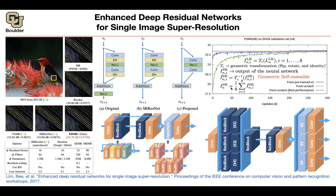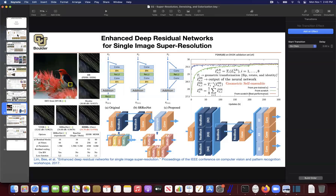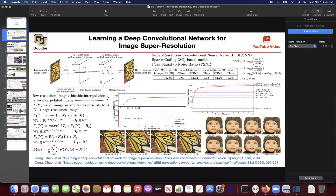Bilinear interpolation can actually be written as convolution operations with a fixed kernel — there are no learned weights. So in that sense, the network is generalizing bilinear interpolation with learned kernels. In fact, the first super resolution paper before deep learning had three steps — patch extraction, non-linear mapping, and reconstruction — and the key insight was that all three can be replaced with convolutions.